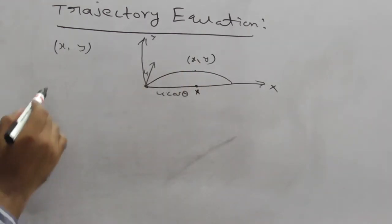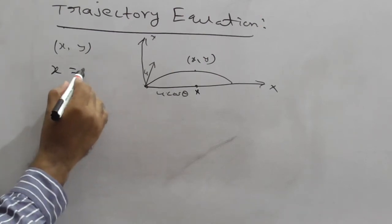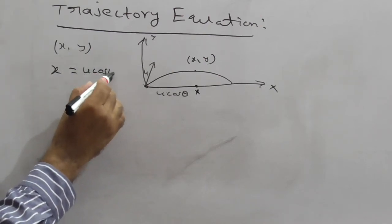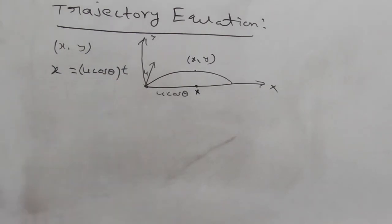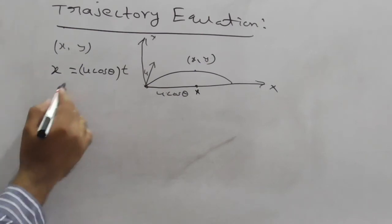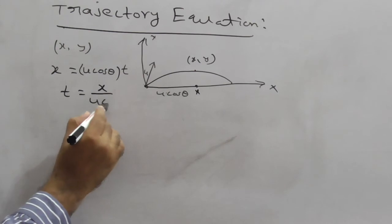First we calculate what is x value here. So x is equal, the distance is equal speed into time. So s equals u t plus half a t square. Here u is nothing but u cos theta at time t. T here we are taking it as t only. So acceleration is 0. That half a t square part becomes 0, u with respect to the x axis. By using this you can write t is equal x by u cos theta.